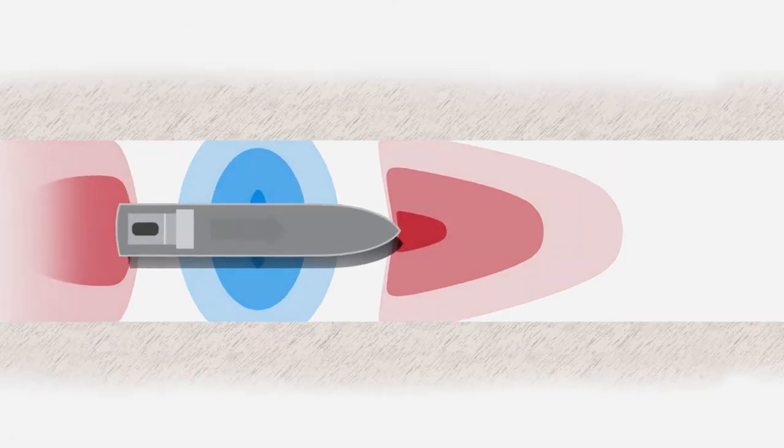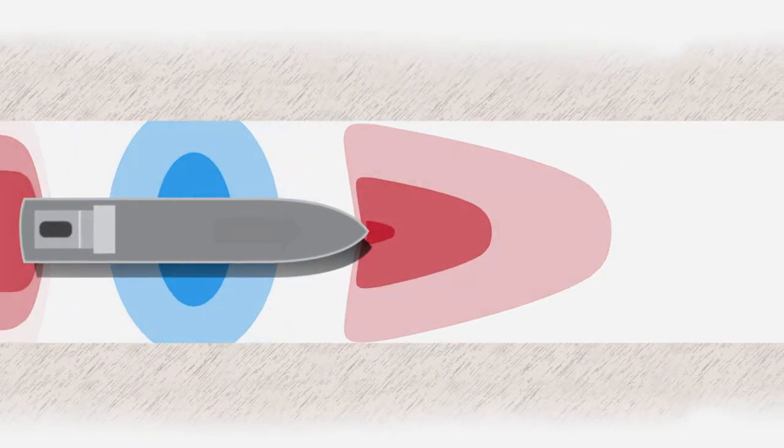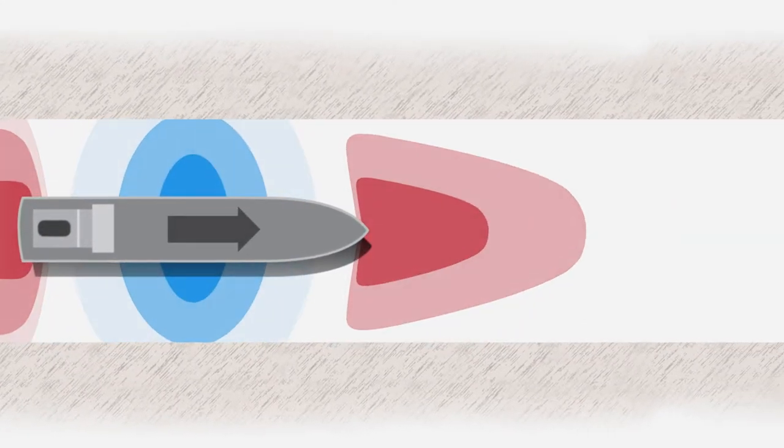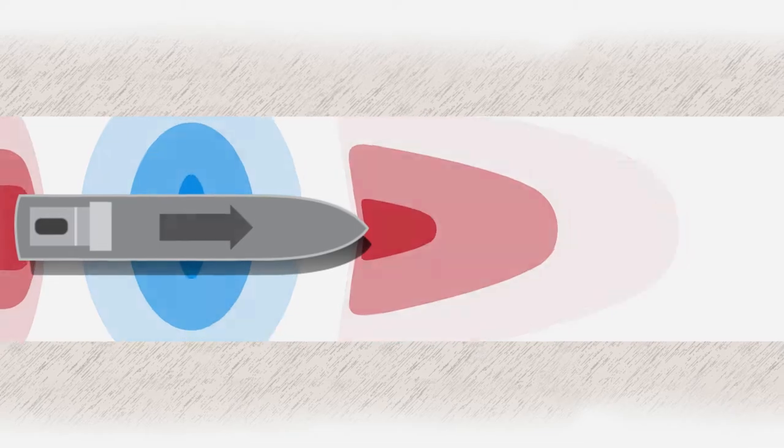The bow is creating a high pressure zone as it pushes the water ahead of it, just like in the bicycle pump.